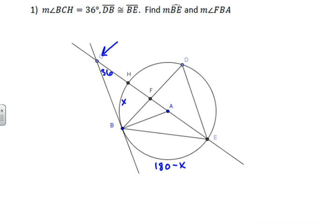And so we can call arc BE 180 minus X. So to find X, you would just say, well, 36 equals the difference 180 minus X minus X divided by 2. That's got to equal 36, so you solve the equation. That gives you 72 equals 180 minus 2X. Negative 108 equals negative 2X, so X equals 54.